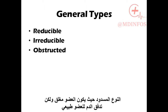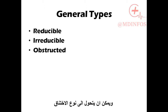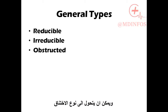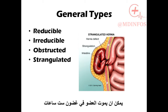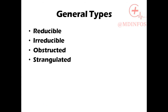The obstructed hernia is one in which the bowel is obstructed but has a good blood supply. It can progress to strangulation, in which there is a cut-off blood supply to the contents, potentially ending in gangrene within six hours. We also have the inflamed hernia, in which the contents of the sac become inflamed.